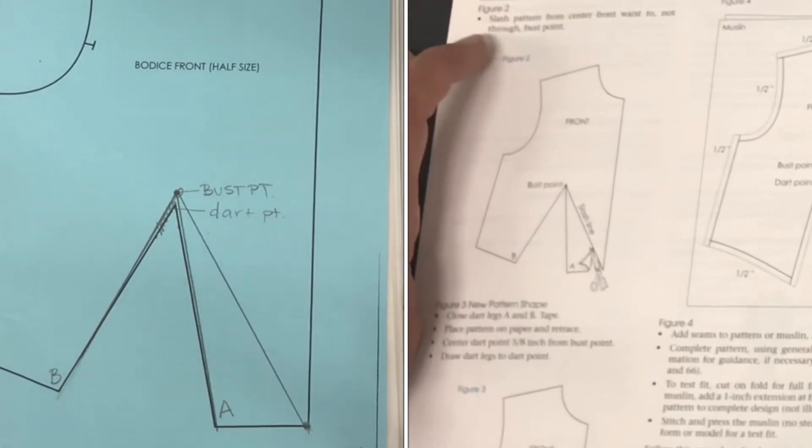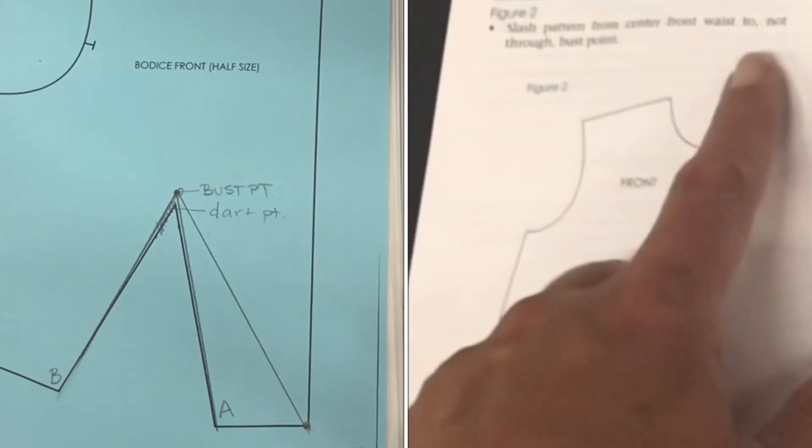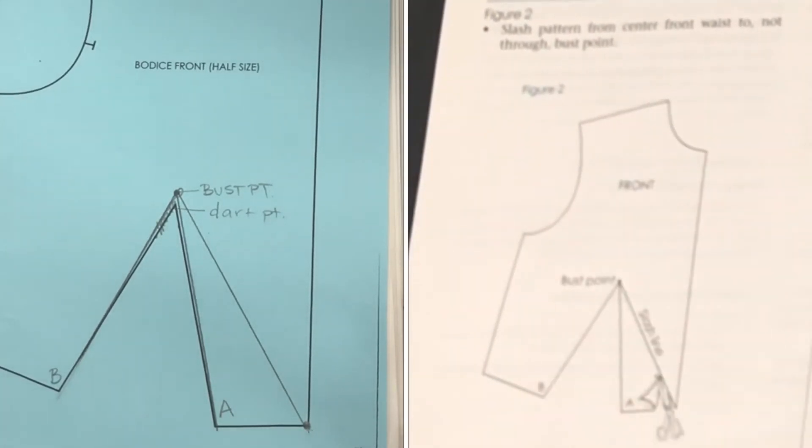Okay, figure two. Now we're going to slash our pattern from center front waist up to but not all the way through the bust points. We're going to get our scissors and slash it. Great.